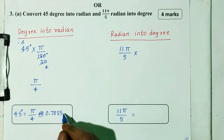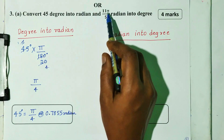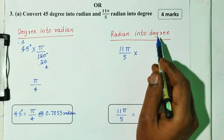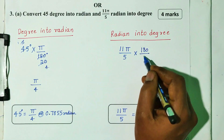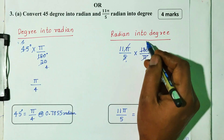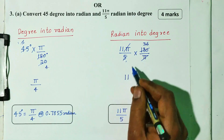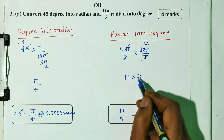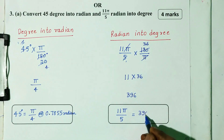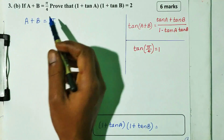Next, radians into degrees. Take 11 pi divided by 5, multiply by 180 divided by pi. Pi cancels. Simplify: 11 multiplied by 36 equals 396 degrees.